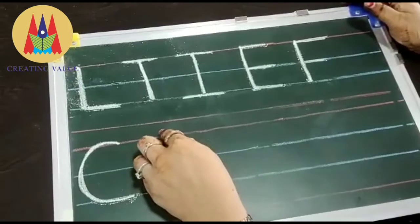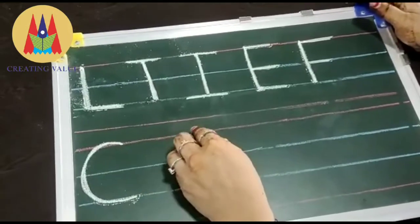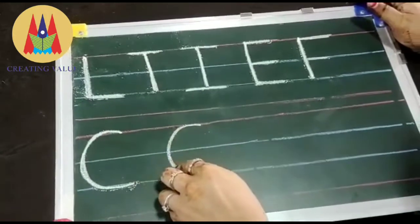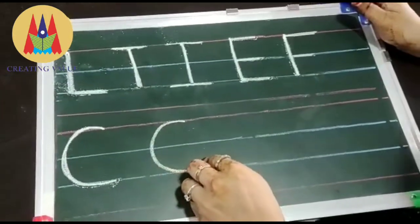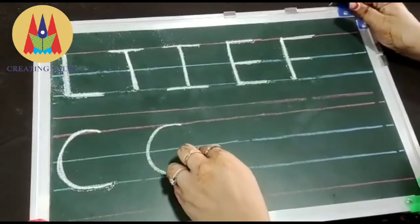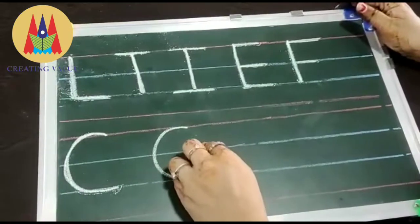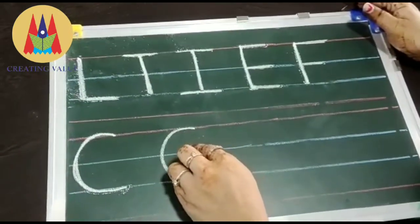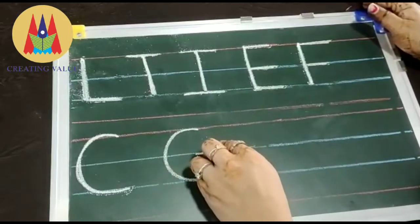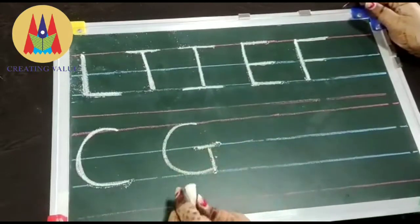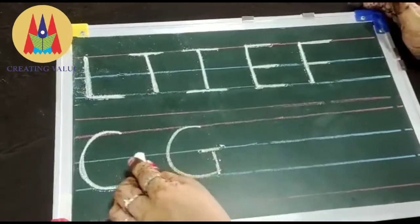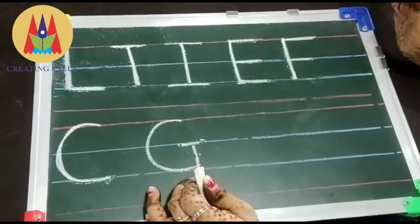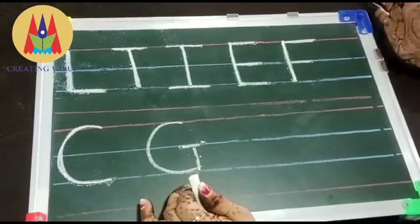Our next alphabet is G. Same like C, first we have to curve, then standing line in blue, and sleeping line again in blue. This is letter G. G for goat, G for grapes and G for giraffe.